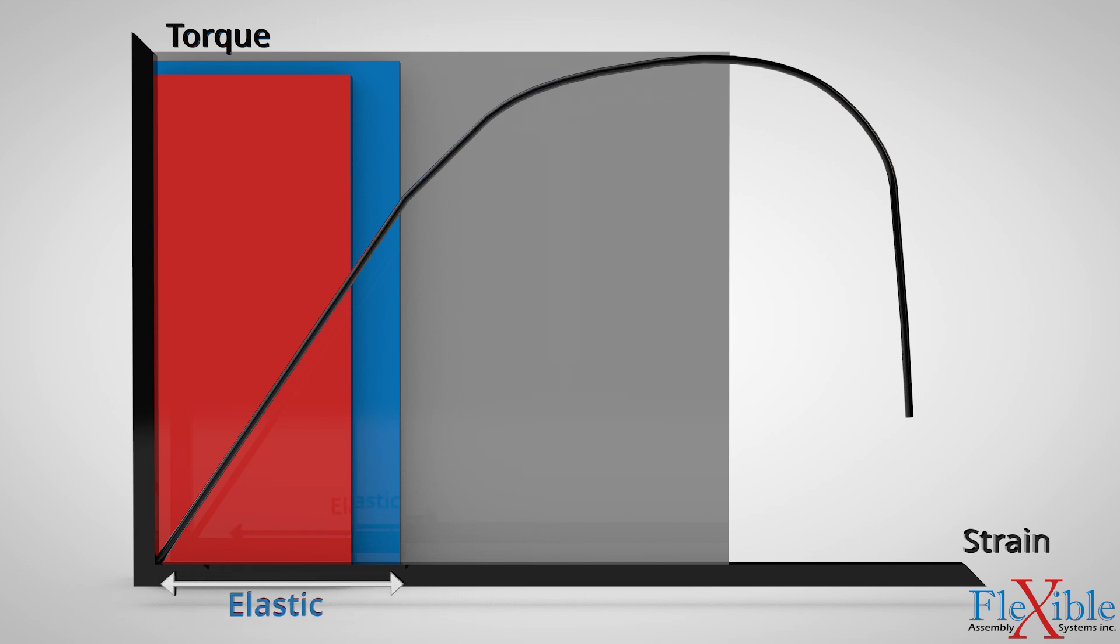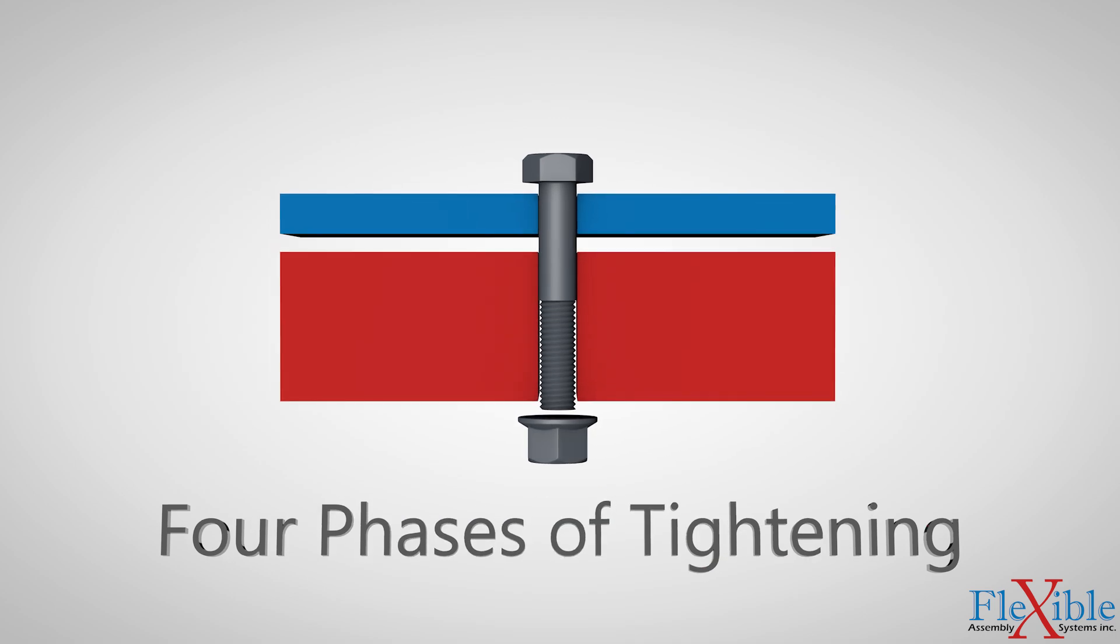While a fastener remains in the elastic range, it can deform safely and return to its original shape once the load is removed. However, once it passes into the plastic range, it will remain permanently deformed. Let's review by breaking down tightening into four phases.